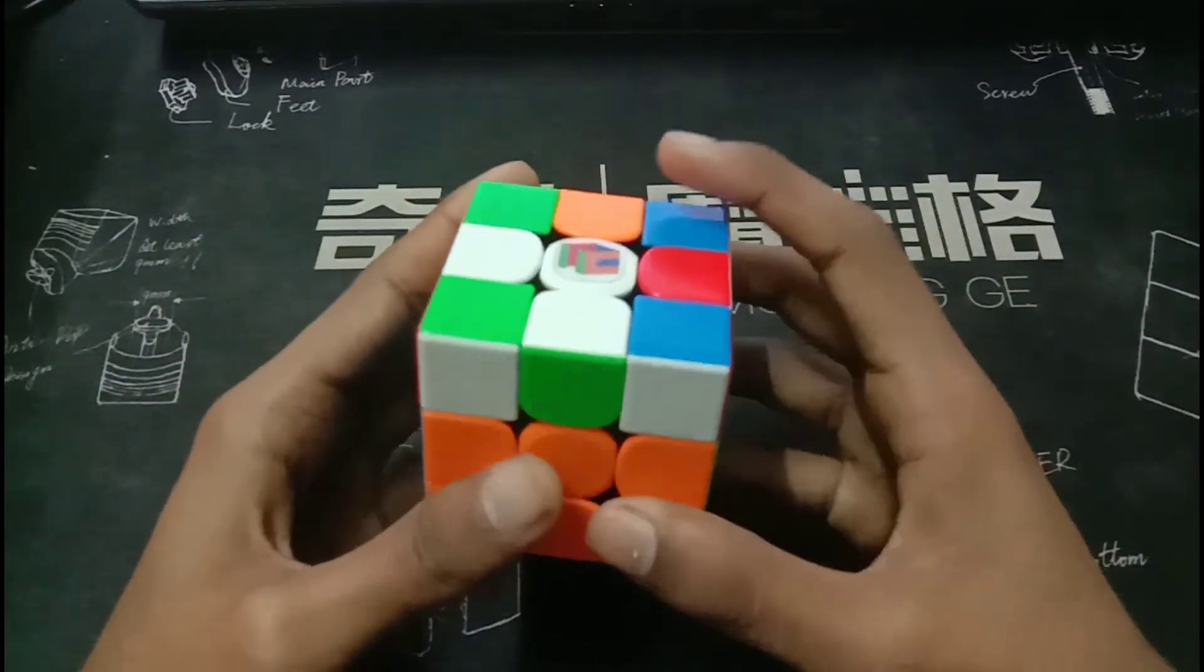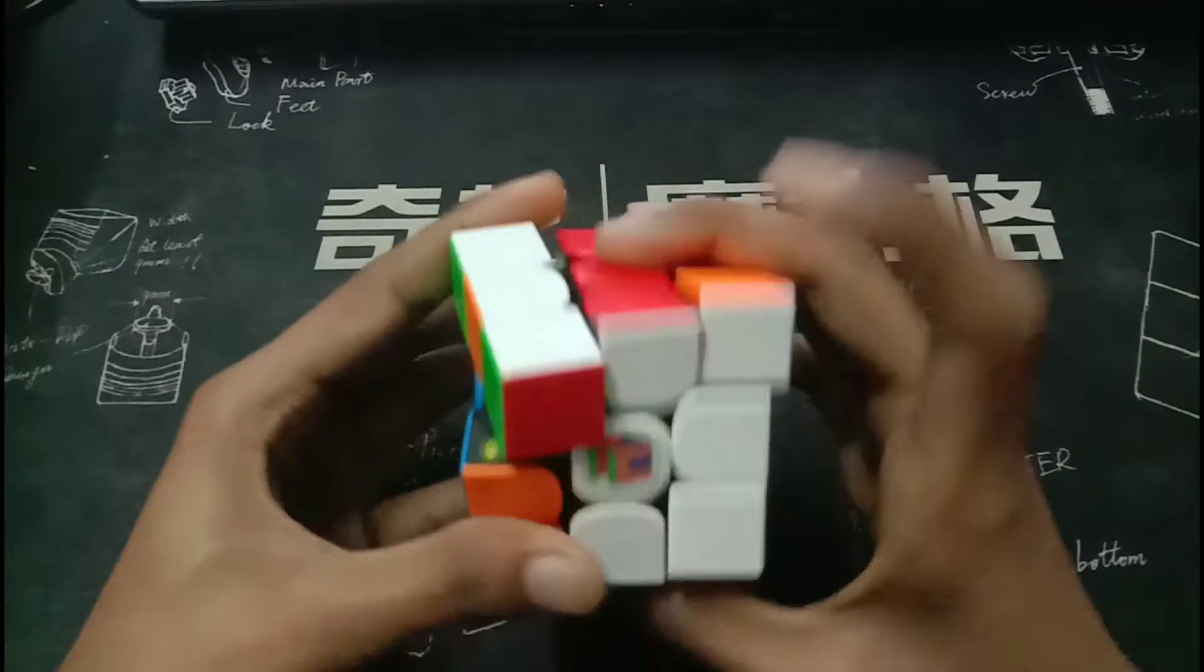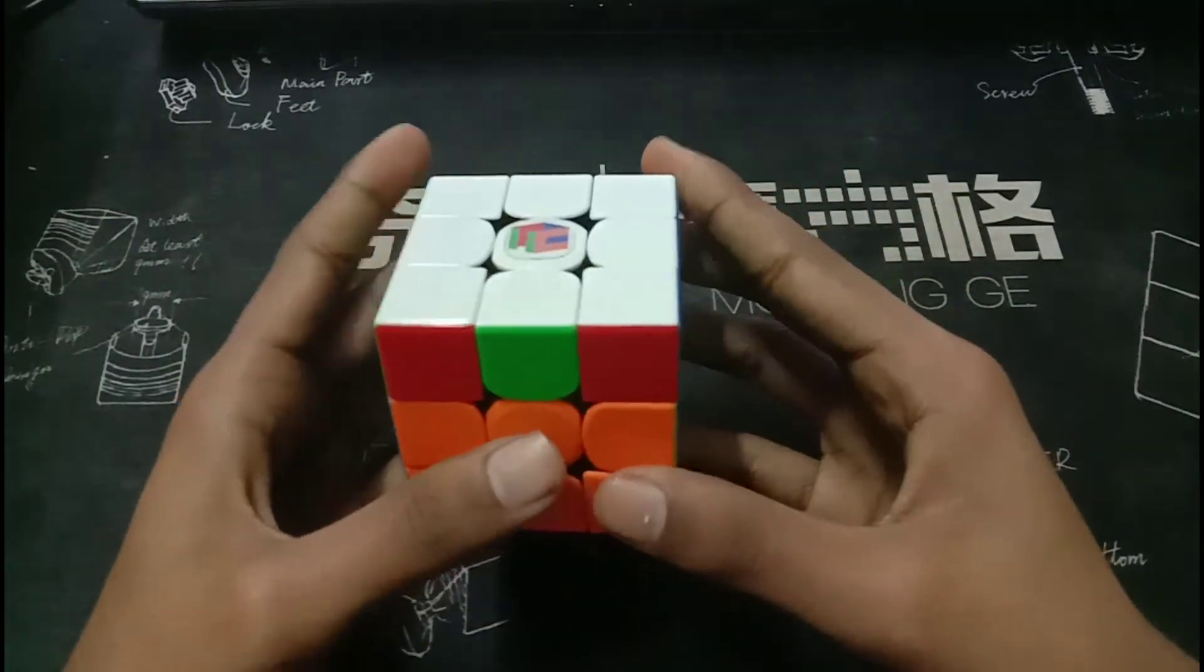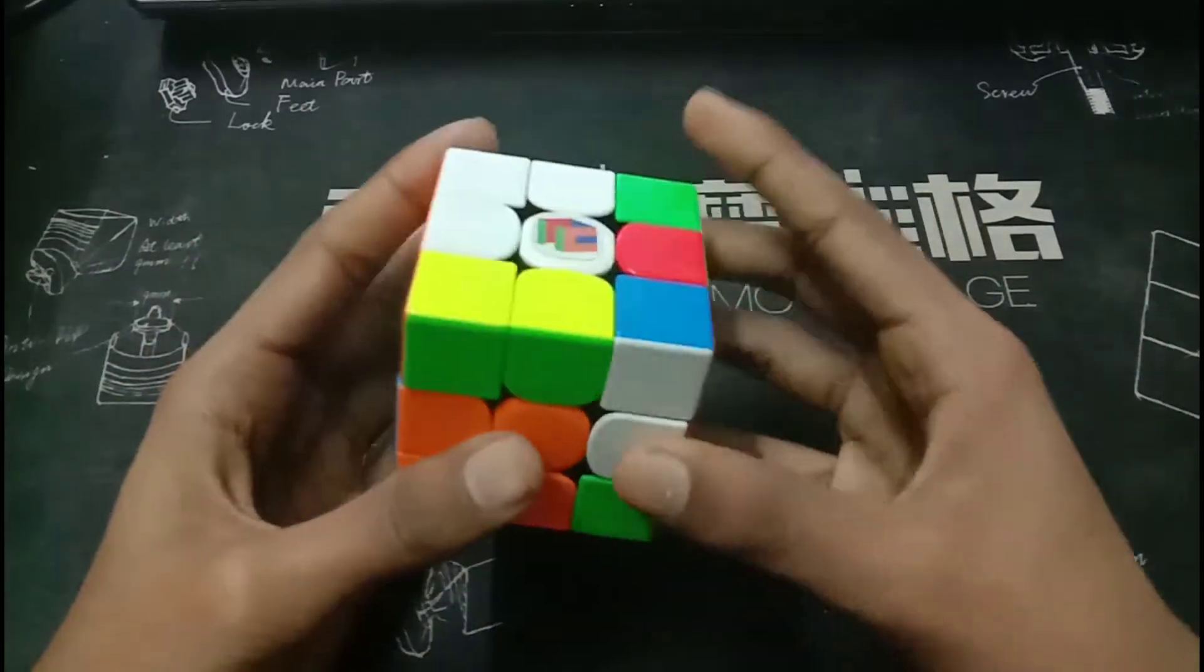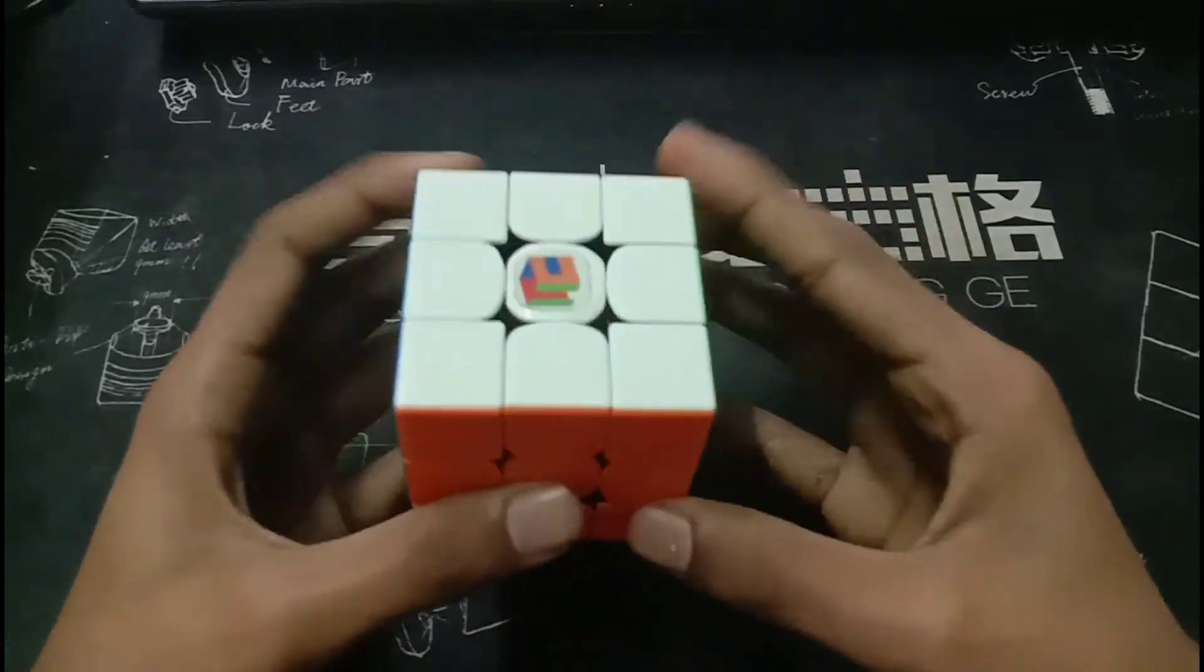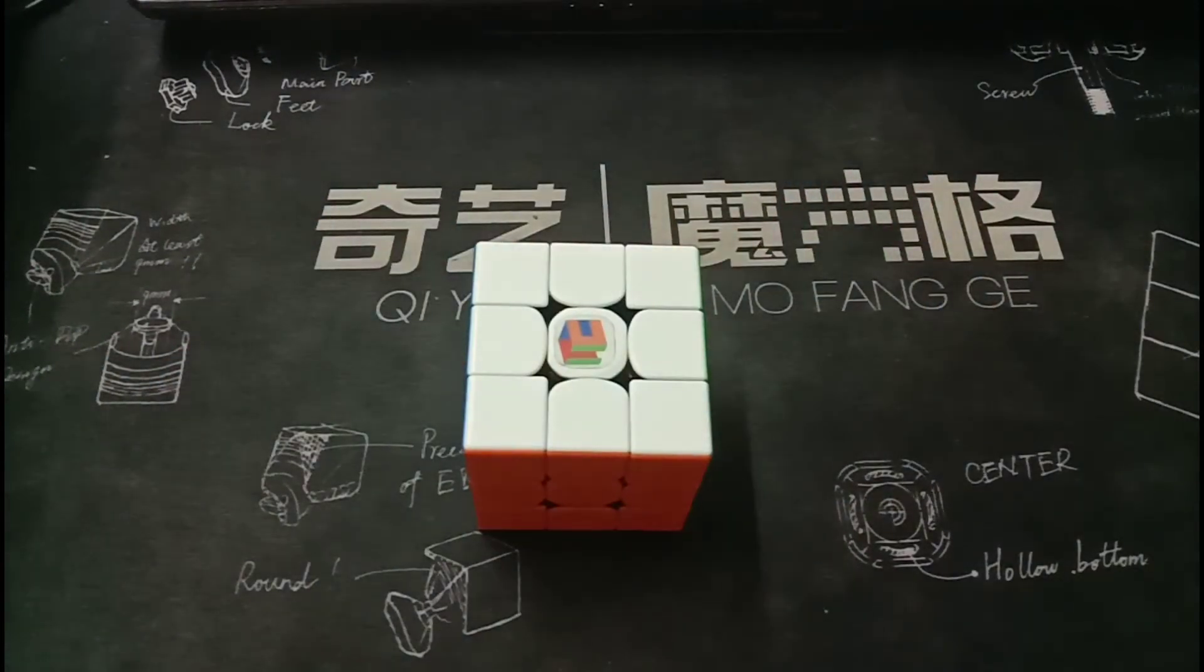And this is a very simple OLL. Like this. And then we have the U perm. This was a very, very fast solve. It was a 5.2.